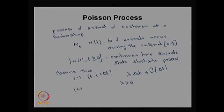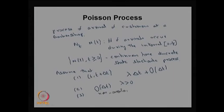The second assumption: the probability of more than one arrival in the same interval t to t plus δt is of order O(δt). That means as δt tends to 0, this value tends to 0. The third assumption: occurrence of arrivals in non-overlapping intervals are mutually independent.